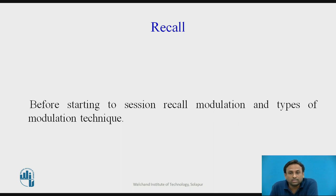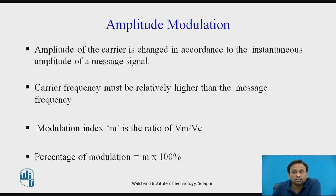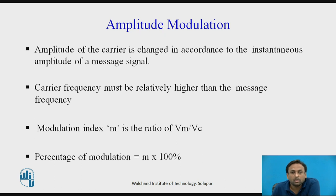Before starting this session, recall modulation and the types of modulation techniques we studied in the previous lecture. Now let's start with amplitude modulation. Amplitude modulation is where the amplitude of the carrier signal is changed in accordance with the instantaneous amplitude of the message signal, which is the information signal.